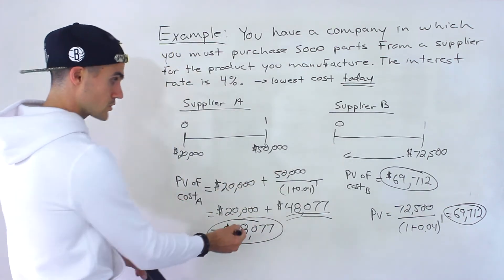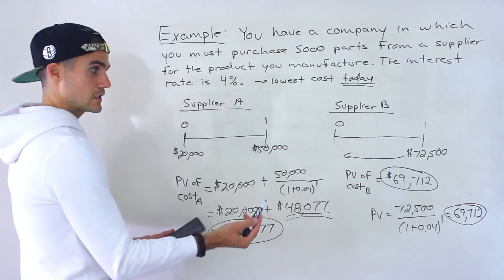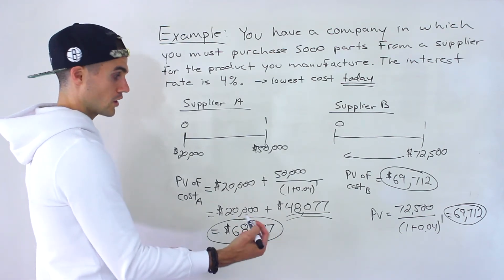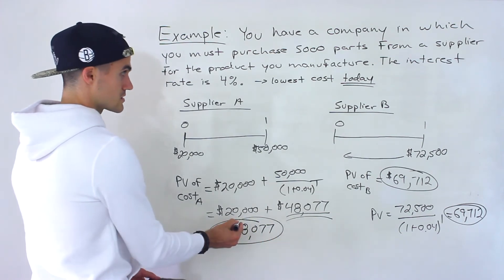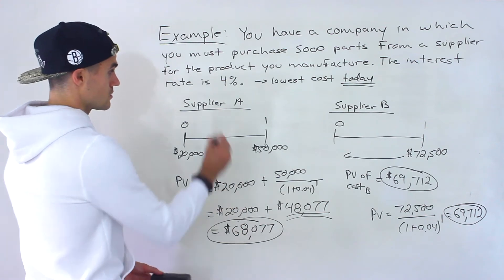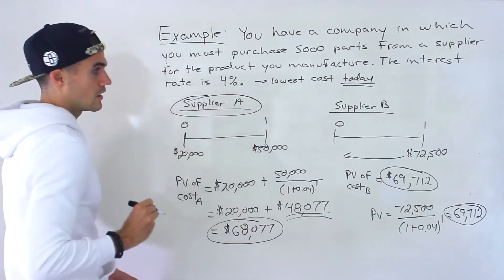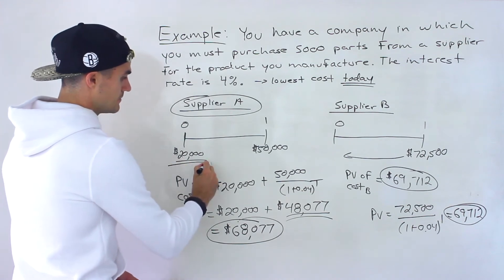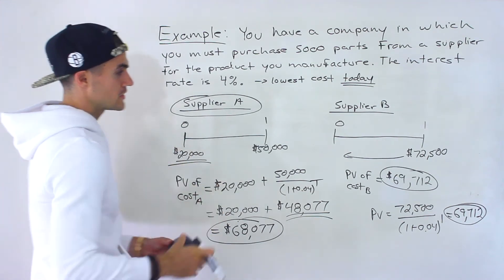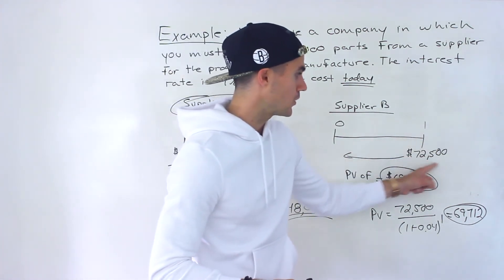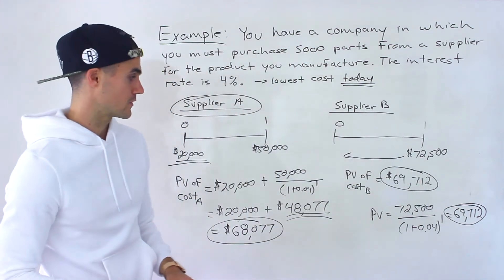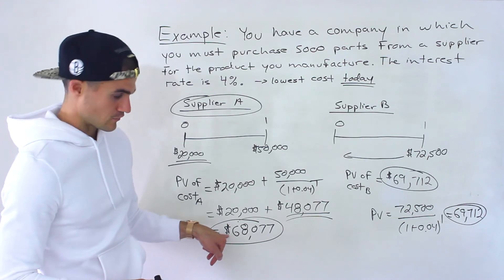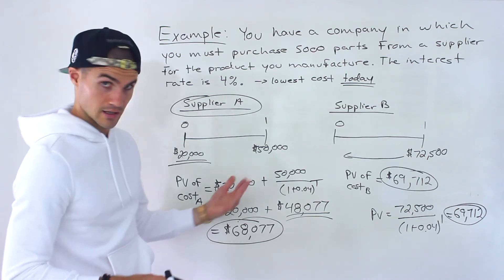Comparing the two numbers, supplier A has the lower present value of cost at $68,077 versus $69,712 for supplier B. So supplier A is the one you would go with. Even though you have to make a payment today, when you incorporate time value of money, that larger payment in one year is actually more expensive.